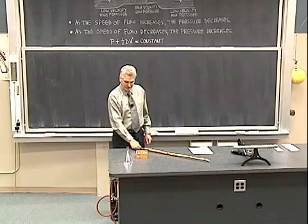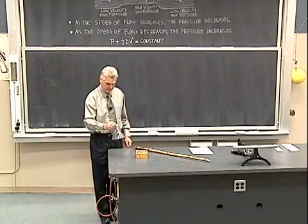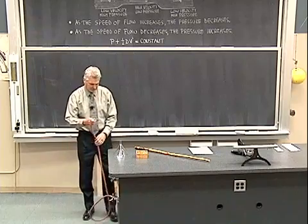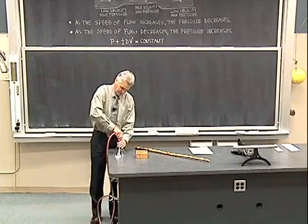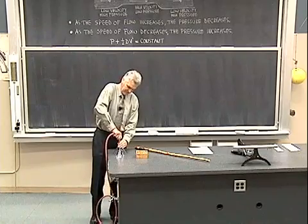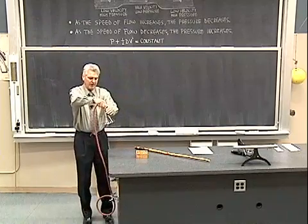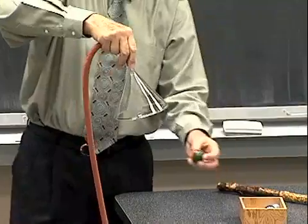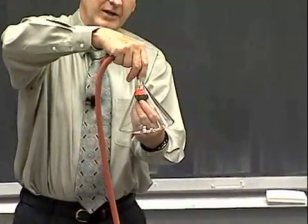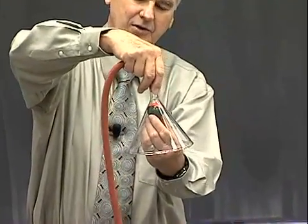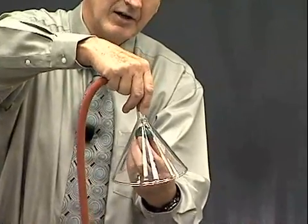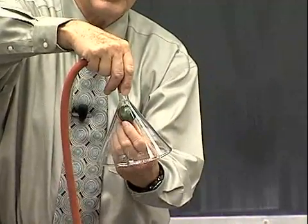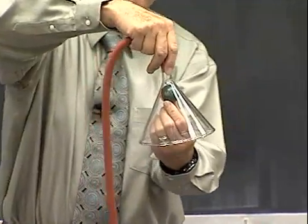We can demonstrate that with this funnel. What I'm going to do is connect the air hose up to the bottom of this funnel, which will become the top of the funnel, and I'm going to blow air down through the funnel. Then I'm going to stick a little ping-pong ball in it, and as the air squeezes between the glass and the ping-pong ball, it's going to squeeze through there at a high velocity.